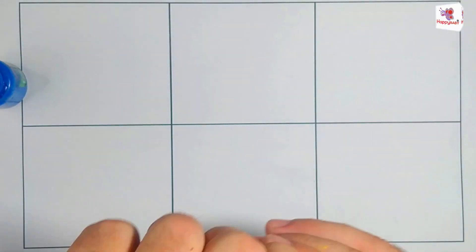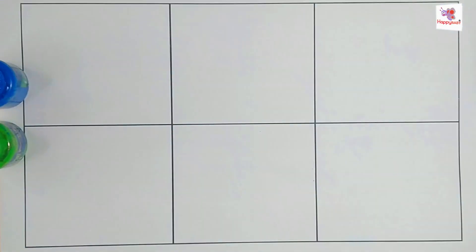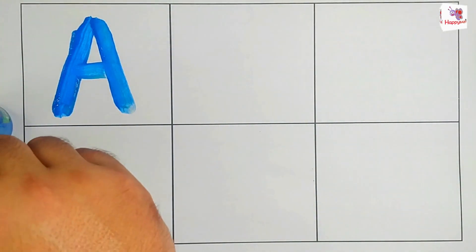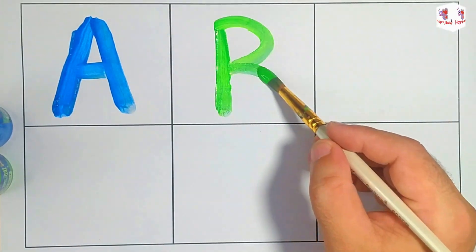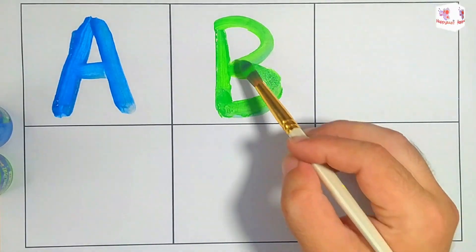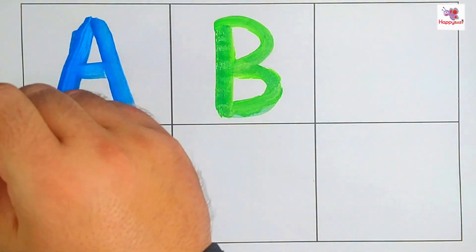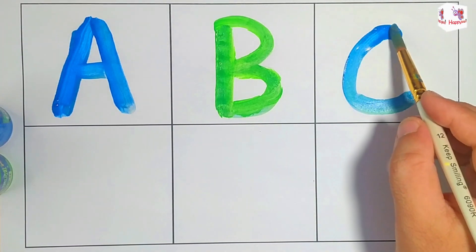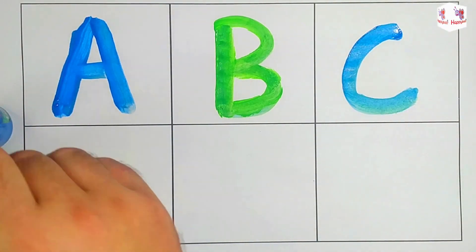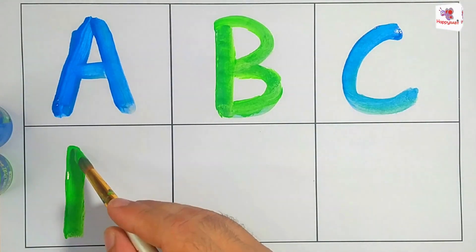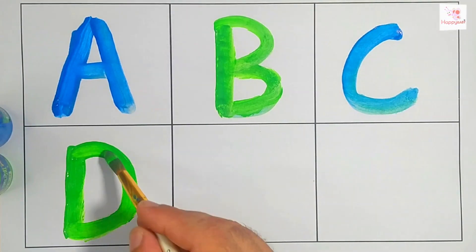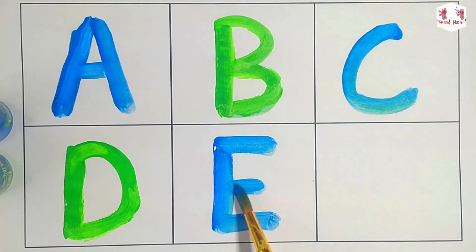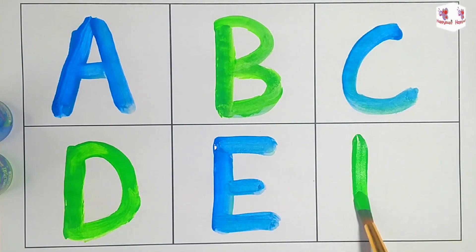Blue color: A, A for apple. Green color: B, B for butterfly. Blue color: C, C for cat. Green color: D for dog. Blue color: E, E for elephant. Green color: F, F for flower.